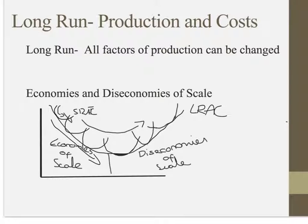However, there comes a point where you reach your optimum, and then you start to get diseconomies of scale. This occurs in situations where your firm gets too big and certain managers are no longer focused on profit — they're looking at revenue, they have different objectives, or there's not enough communication between management and workers, or workers become demotivated. All these things that come with increasing firm size can lead to diseconomies of scale and eventually your costs will rise. That's why the LRAC curve is shaped like this, though it can be shaped in different ways depending on the type of business. This has essentially outlined short run and long run production and cost theory and the key elements of each.